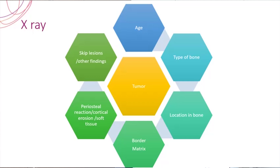Then you start looking at the tumor. The tumor may have its own border and its own margin. What is the border? What are all the types of border? We will be discussing slightly later. Then you talk about the covering of the tumor, especially the periosteal covering. There may be a periosteal reaction, which may be of various types — it can be interrupted or non-interrupted.